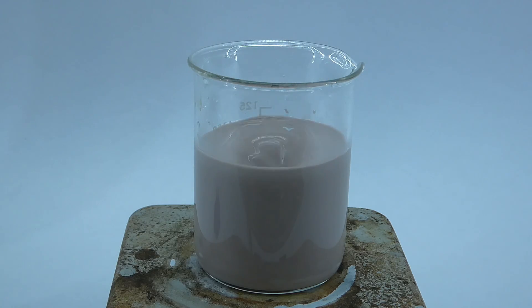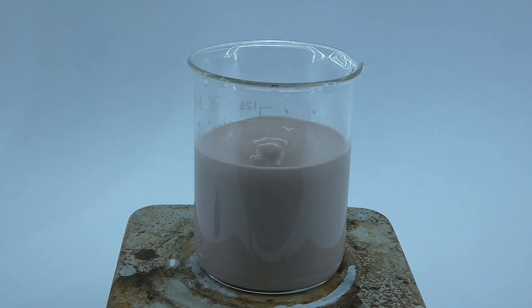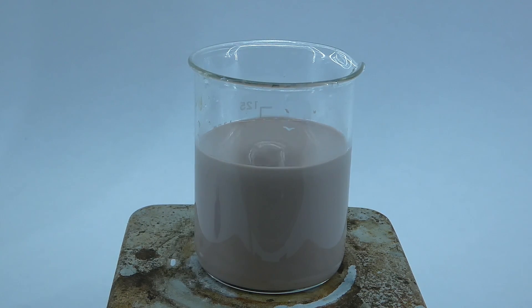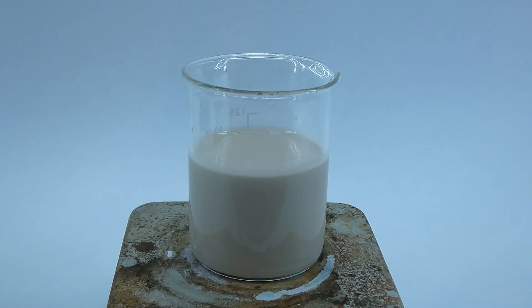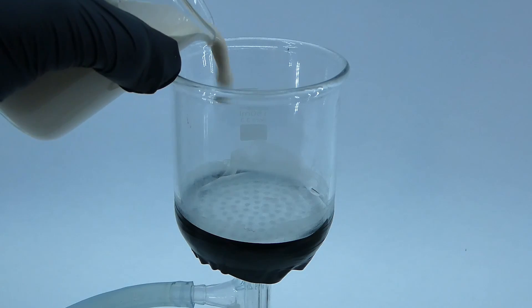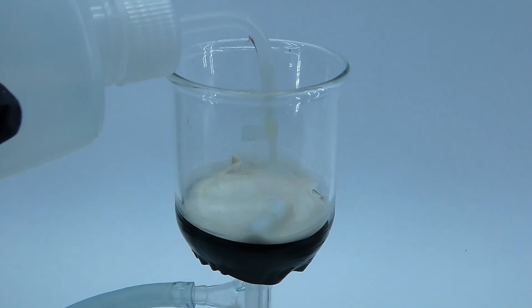Copper iodide is insoluble in water, and because of that, after I added all of the potassium iodide, the mixture became pretty thick. I now had to filter out the copper iodide, and to do that, I just ran the mixture through my vacuum filter. I also washed it with a lot of distilled water to remove any impurities.